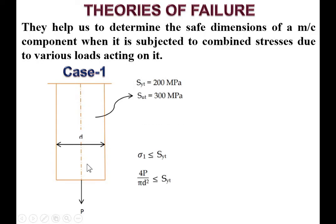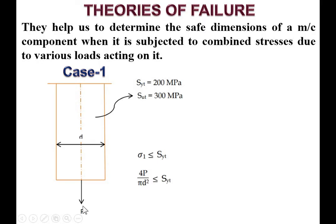Consider case number one: a machine component subjected to only axial tensile force. Say for example, it is a cylindrical component with diameter D. It is very simple to design. If you know the yield stress in tension, stress equals load upon area, P divided by (pi/4 × D²), and that should be equated with the yield strength to find the diameter.